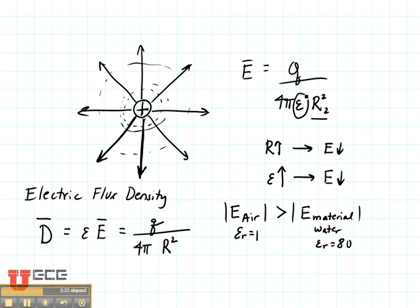This means that the density of the field lines, or the shape of the flux lines, is the same regardless of the material that you are in. So the electric flux in air is equal to the electric flux in water.